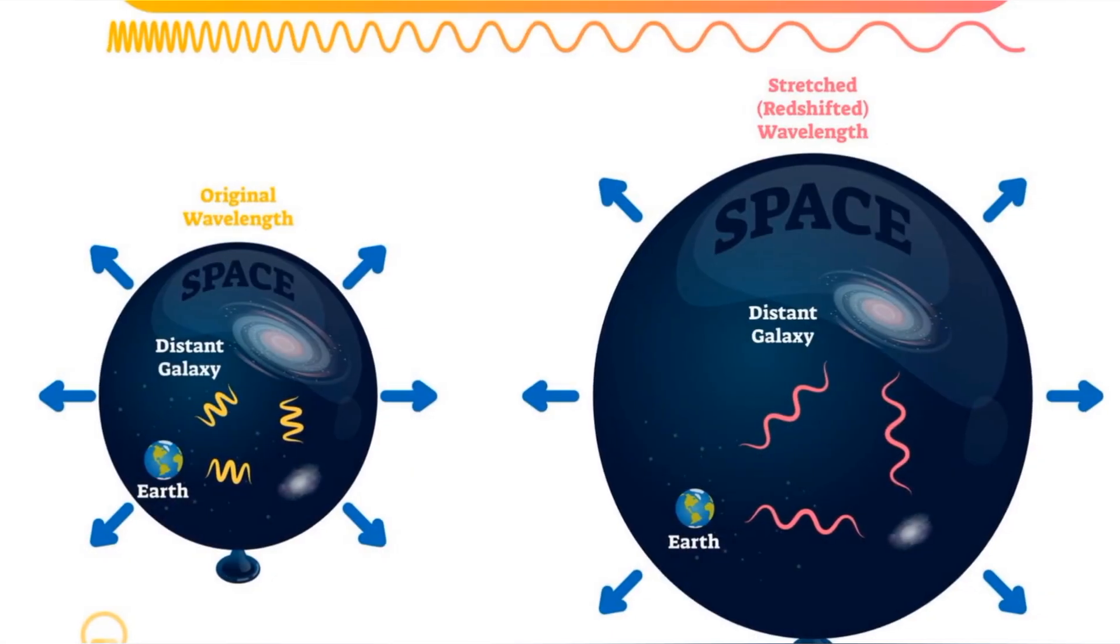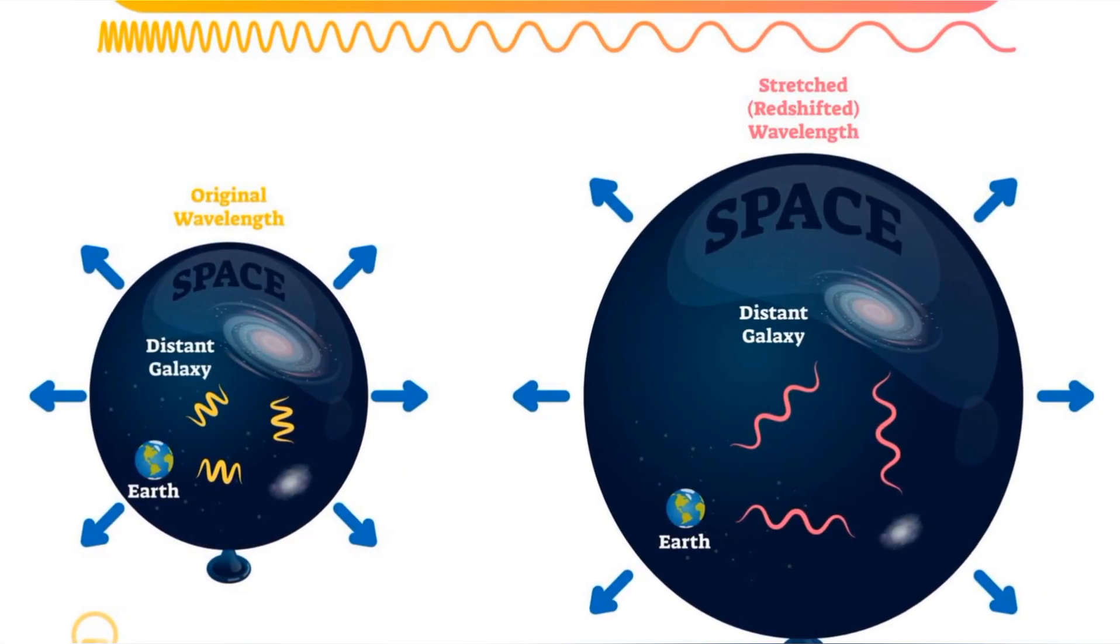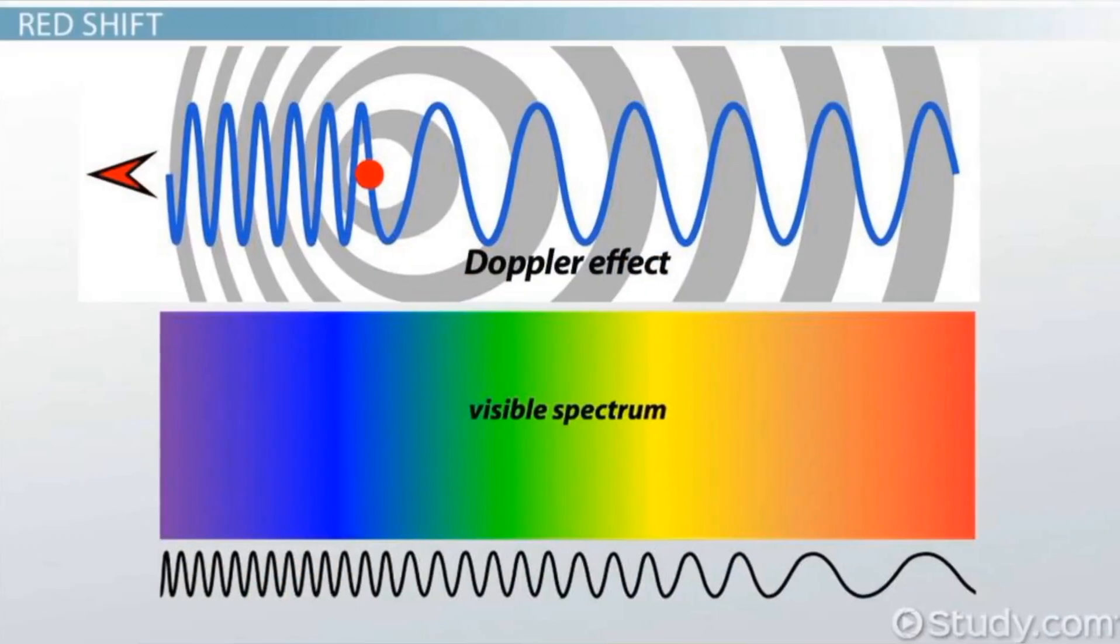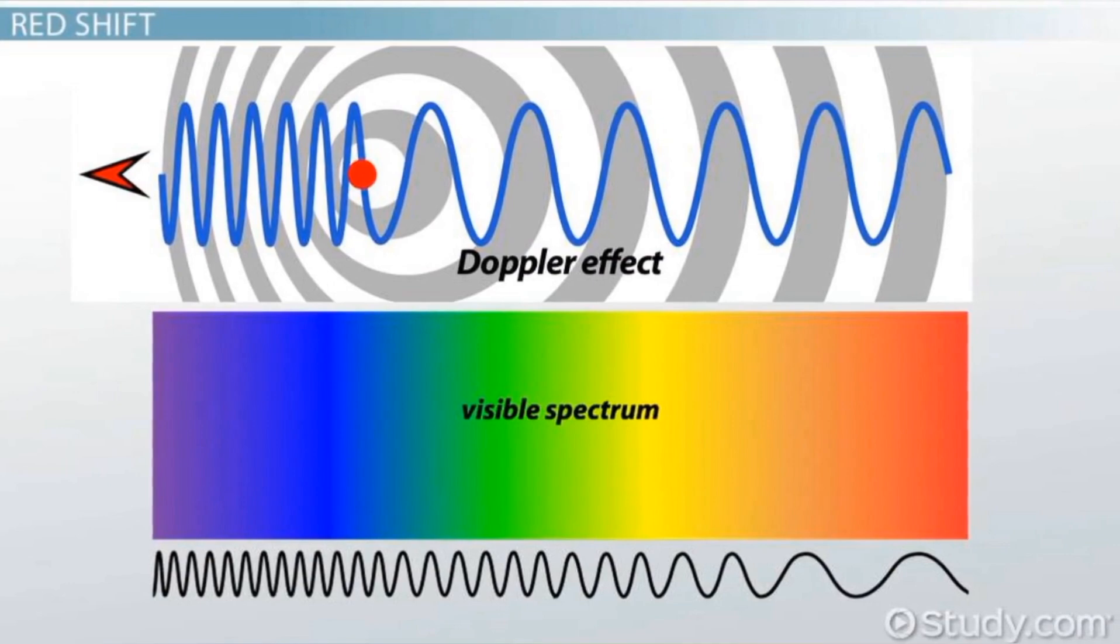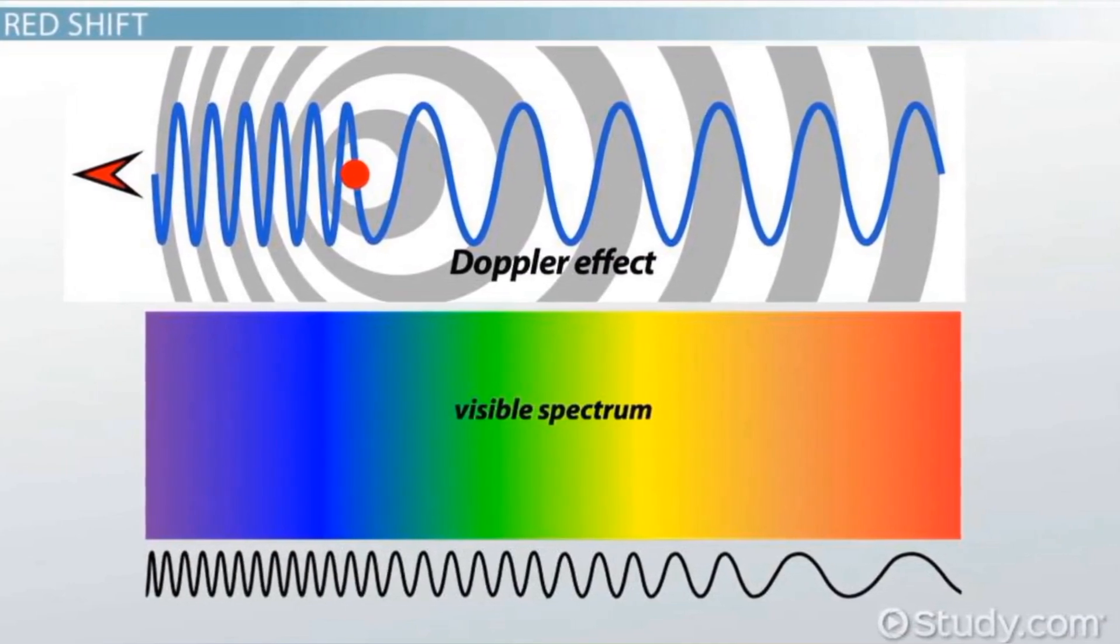One of the keys to unraveling this mystery lies in something called redshift. Imagine redshift as a cosmic speedometer for incredibly long distances. As light travels through space for billions of years, it undergoes a stretching effect due to the expansion of the universe. This stretching causes the light to shift toward the red end of the spectrum, hence the name, redshift.